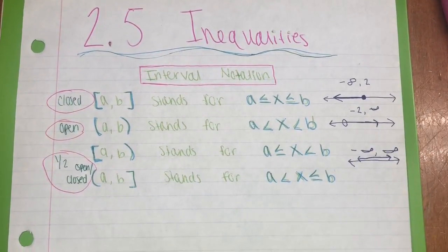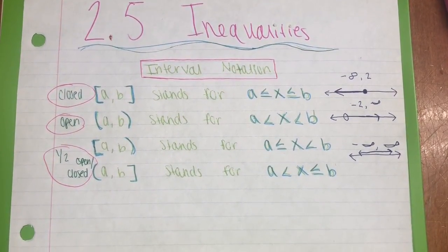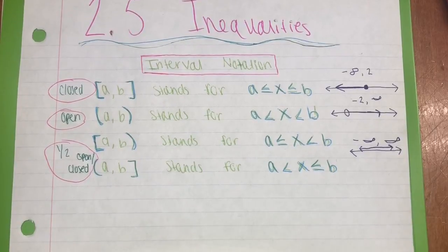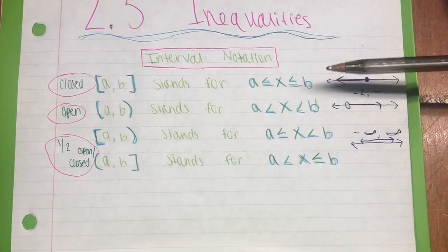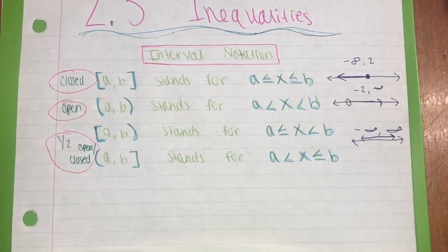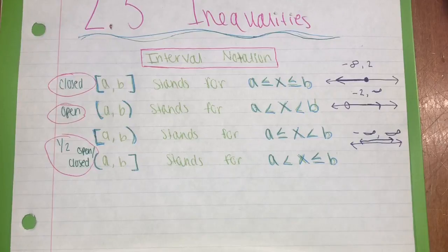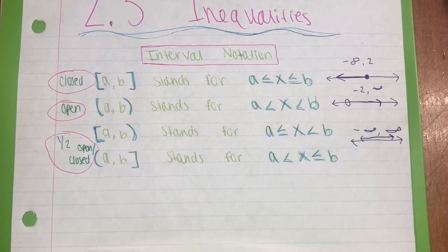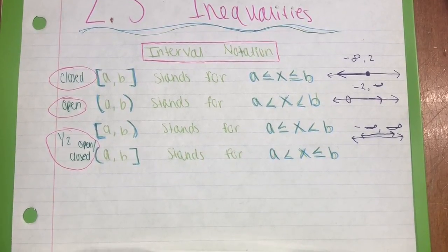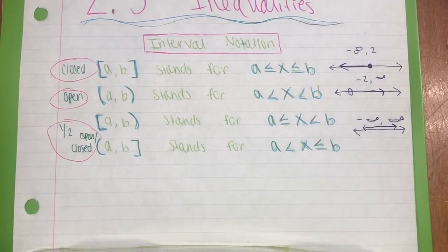If the interval is closed, there will be a less than or equal to sign. If the interval is open, there will just be a less than or greater than sign. And if the interval is half closed or half open, there will be one of each.